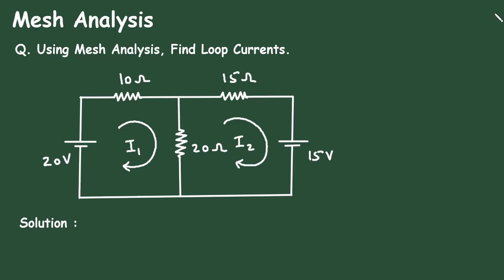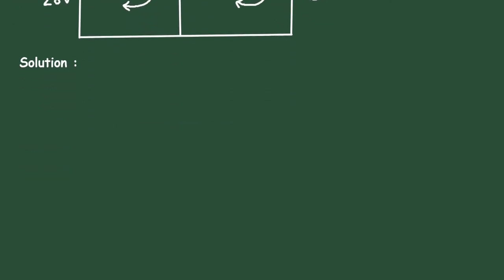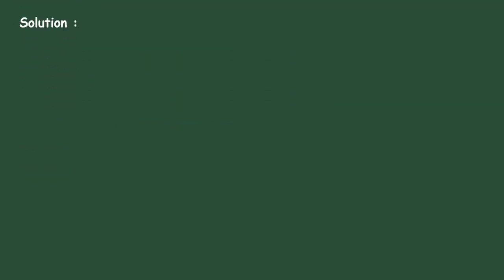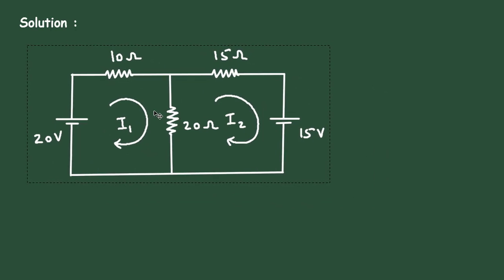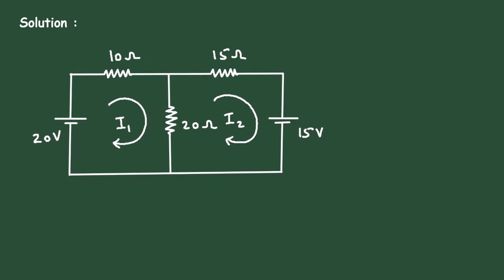Let's solve this circuit. First of all, according to the direction of current I1, here this will be positive, this will be negative, this will be positive here, negative here, positive, negative, positive, negative.